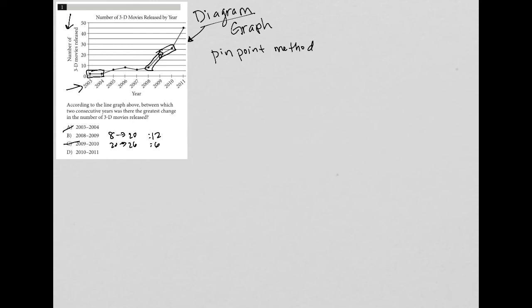Lastly, 2010 to 2011 looks very steep. This is probably the right answer, just visually. But let's make sure. 2010 looks like around 26, and 2011 looks like 45, for a change of 19. So D is definitely better than B. I'm going to cross B out - choice D is the correct answer.